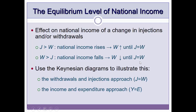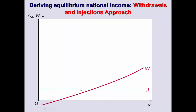All these ideas can be expressed more clearly using Keynesian diagrams. There are two methods: first, the withdrawals and injections approach, and second, the income and expenditure approach. Let's begin with the withdrawals and injections approach.